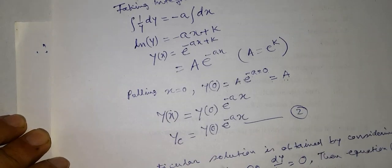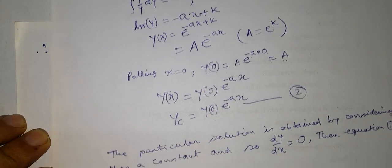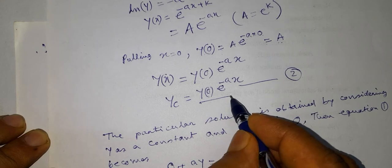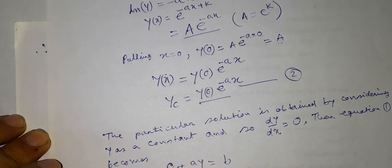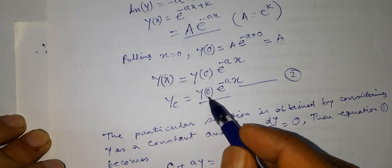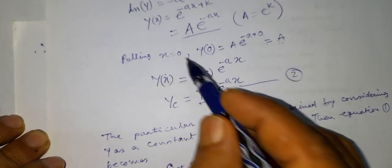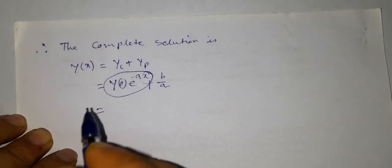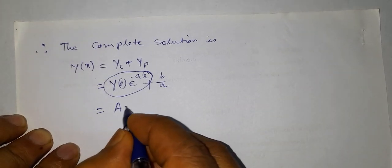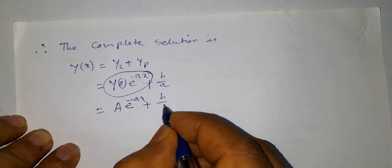Instead of writing the y(0) term, we may write this term as A · e^(-ax). This term and this term are the same thing. Here, this term is obtained after considering x = 0. So instead of the y(0) term, we may write A · e^(-ax). Thus, we may write A · e^(-ax) + b/a.